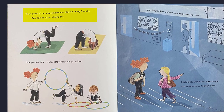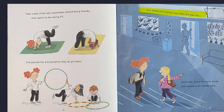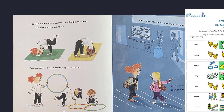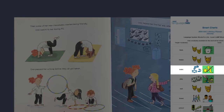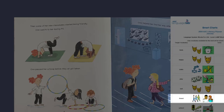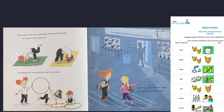Then some of her new classmates started being friendly. One said hi to her during PE. One passed her a hoop before they all got taken. One helped her find her way when she was lost. Each time, Suki felt warm inside and wanted to be friendly back. Each time Suki talked to a new person, she got to make a new friend. What could you do to help a new friend at school?